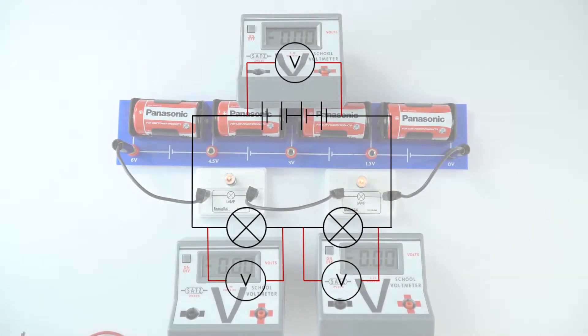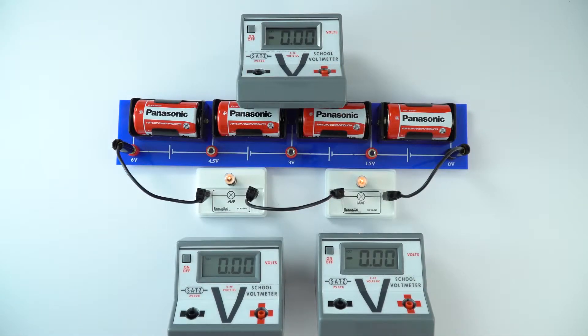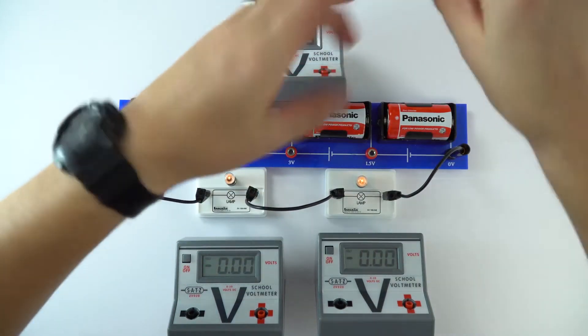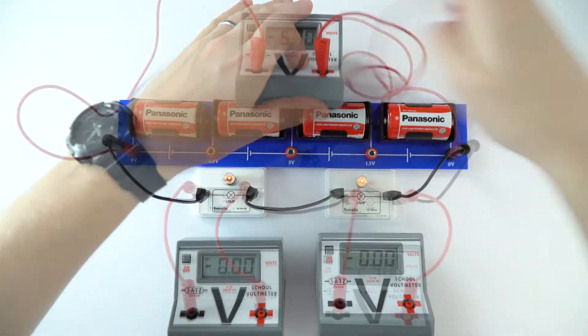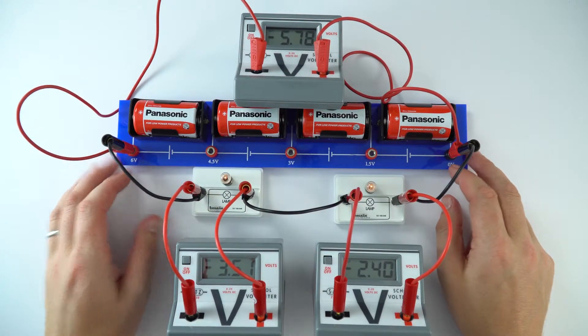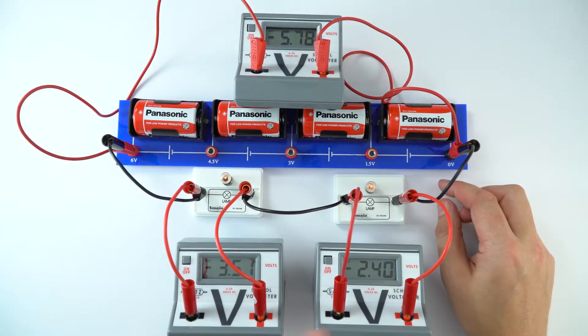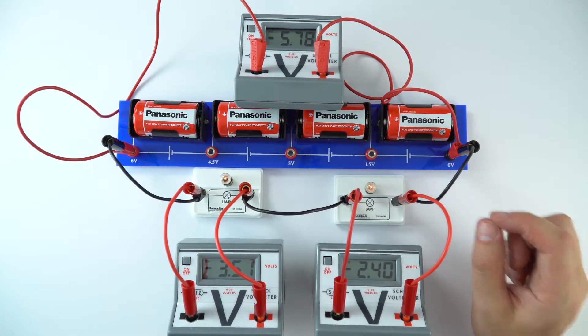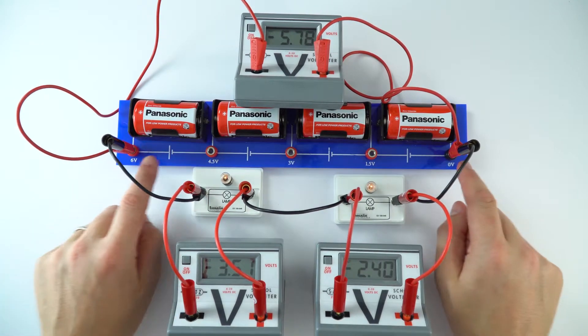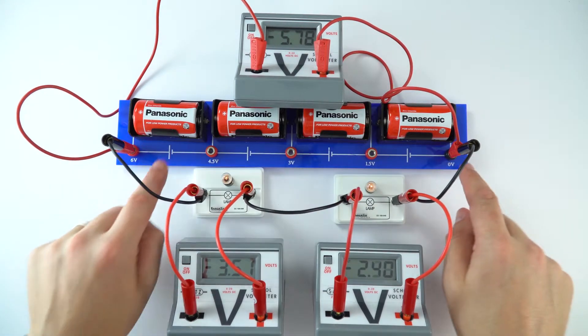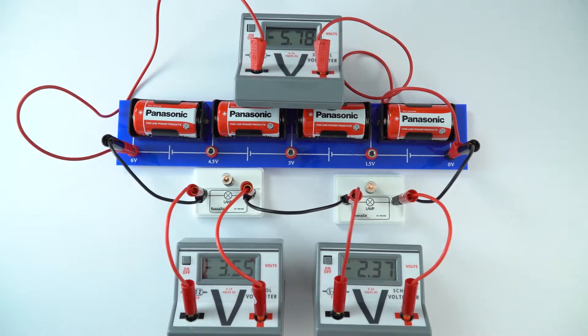I'm also going to attach a voltmeter in parallel across the battery. So hopefully you can just about see that as well. Now it doesn't really matter which color leads we're using, but I'm going to be using red leads for this. So now that's connected up, what we have are negative values. That doesn't really matter, it's the size of the value that we're interested in. It's just due to the way that the cells are arranged. If we were to turn this around the other way, we'd have positive values.